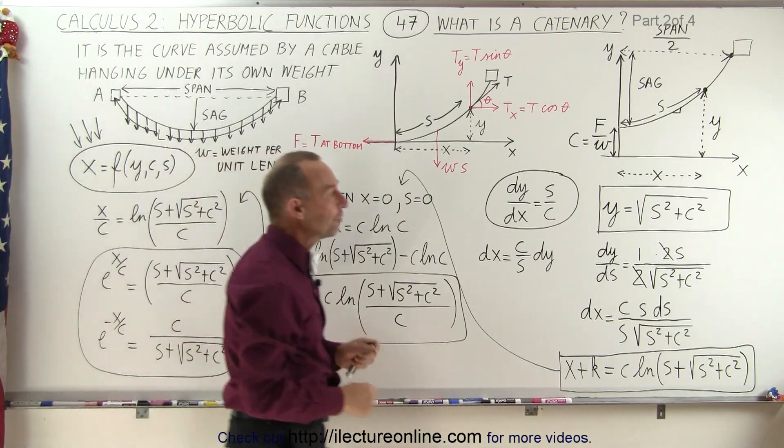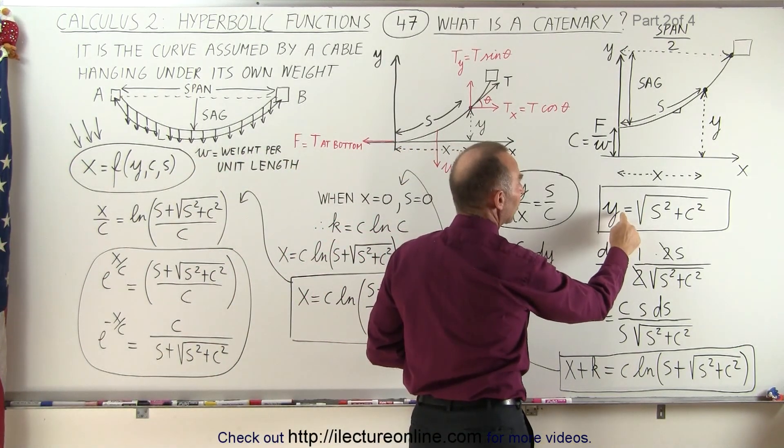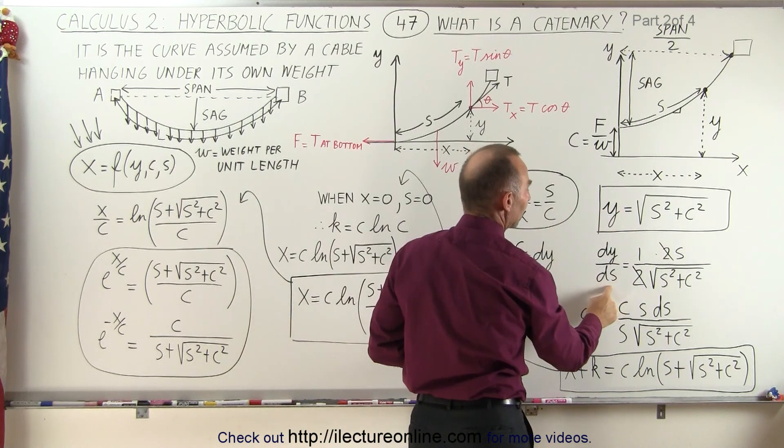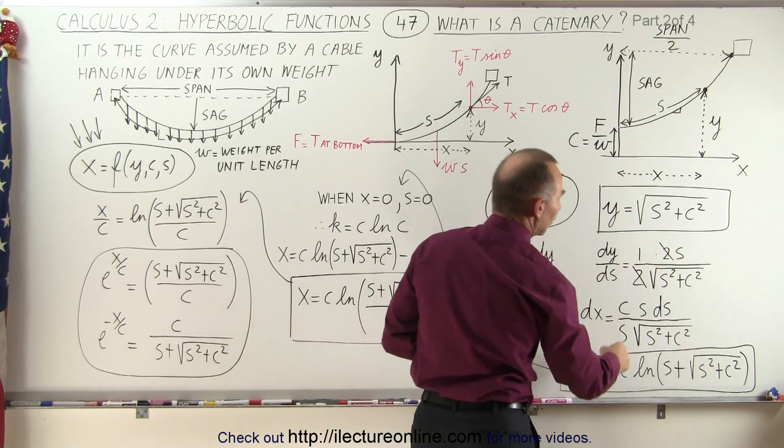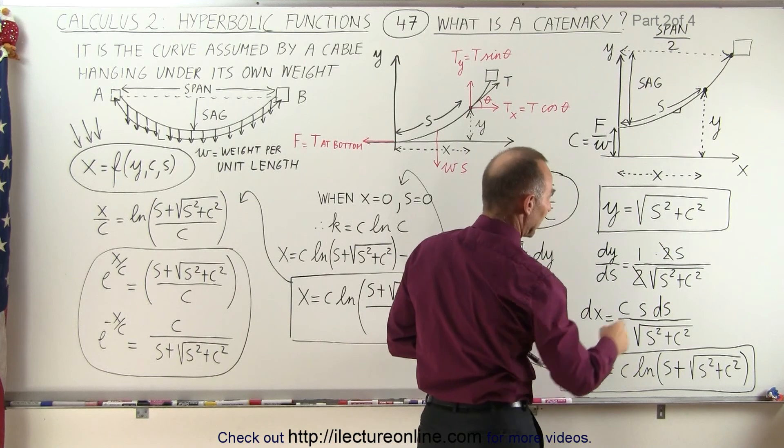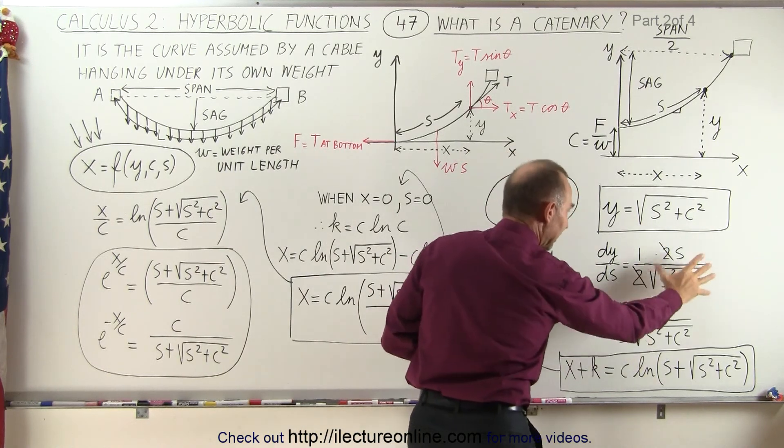So what we're going to do first is we're going to take this equation here and take the derivative of y with respect to s, which is equal to this. Notice that the two's cancel out.